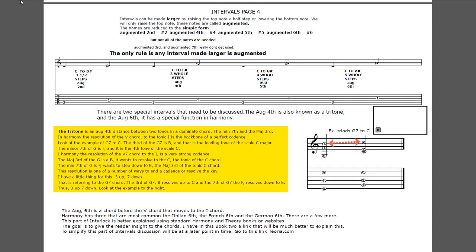The resolution of the five-seven chord to one is a very strong cadence - it's its backbone. The major third of G is B and it wants to resolve to C, the tonic of the C chord. The minor seventh of G is F and it wants to step down to E, the major third of the tonic C. The resolution is one of a number of ways to end a cadence or resolve the key. I have a little saying: three up, seven down. This refers to the G7 chord or any dominant seventh chord. The third of the dominant seventh chord resolves up to the tonic of the one chord - the third of G7, B, resolves up to C. And the seventh of the five chord resolves down to the major third of the tonic.